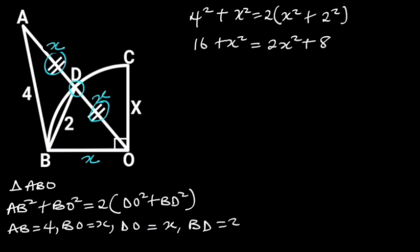If we collect like terms, we will have 2X squared minus X squared is equal to 16 minus 8. 2X squared minus X squared is equal to X squared, and 16 minus 8 is 8. So we are left with X squared is equal to 8.